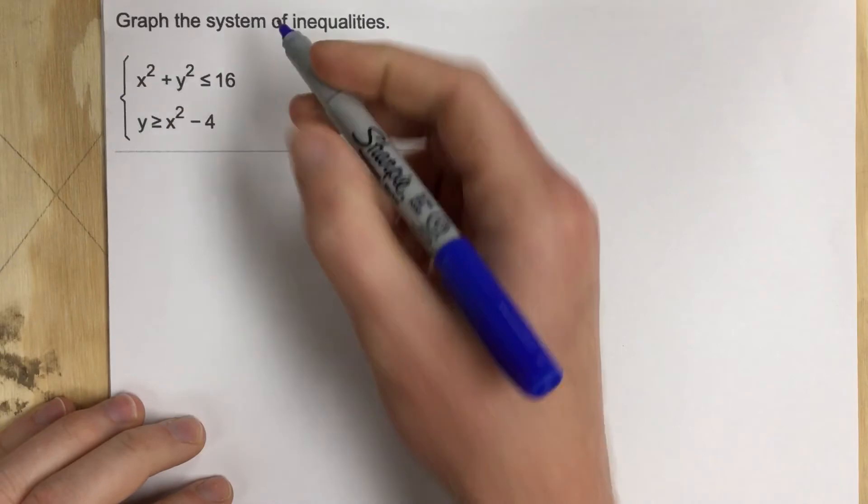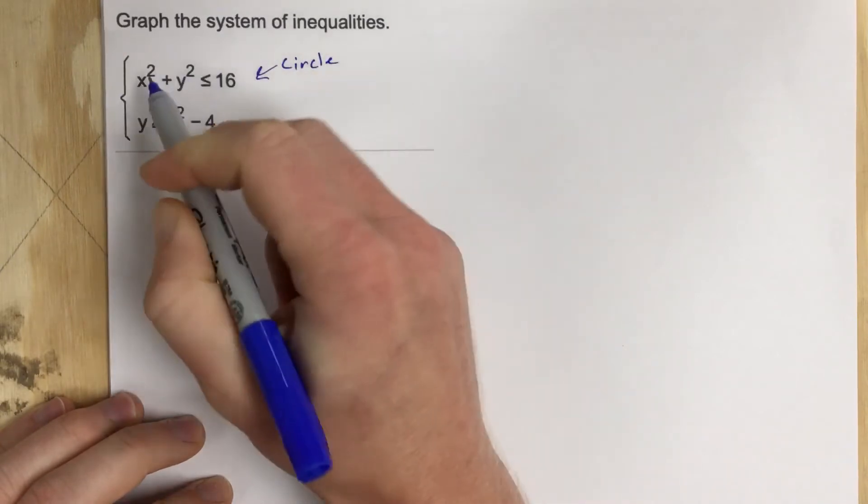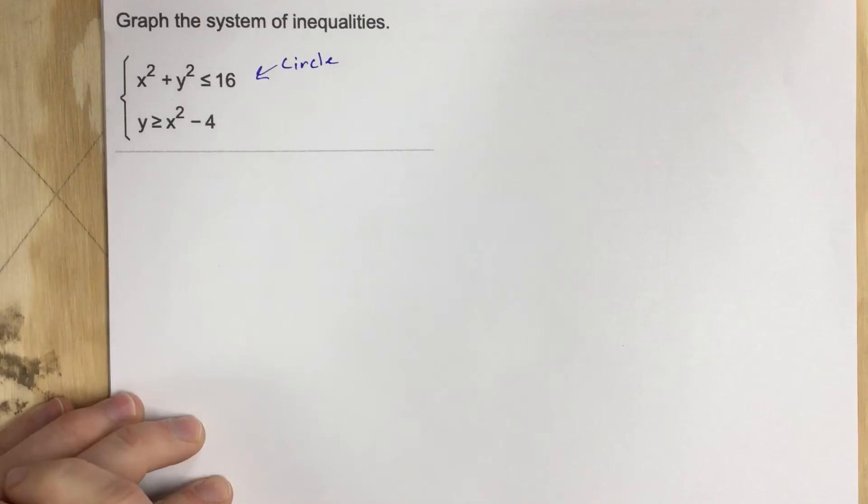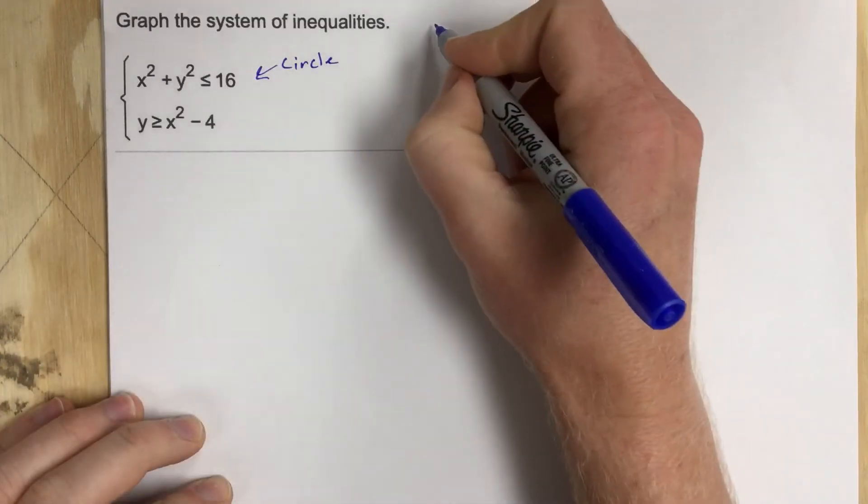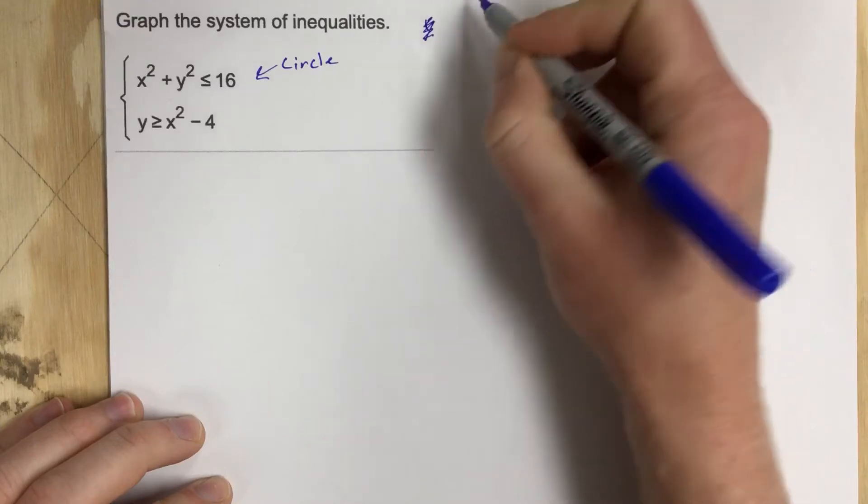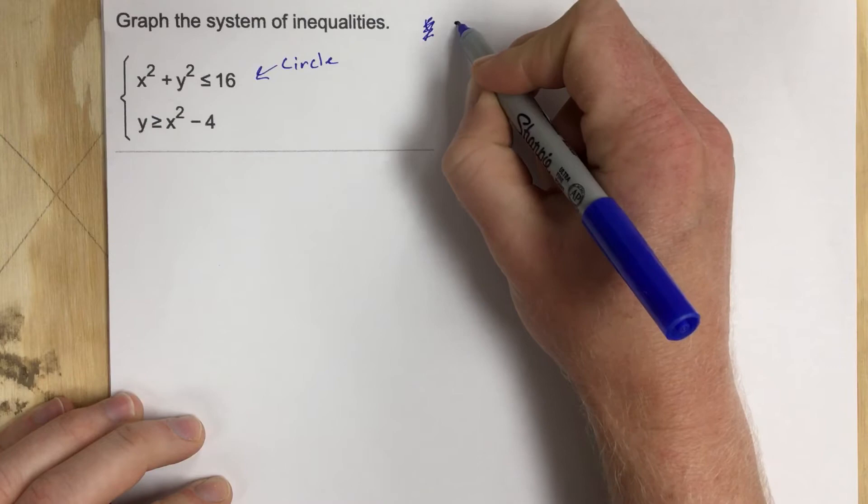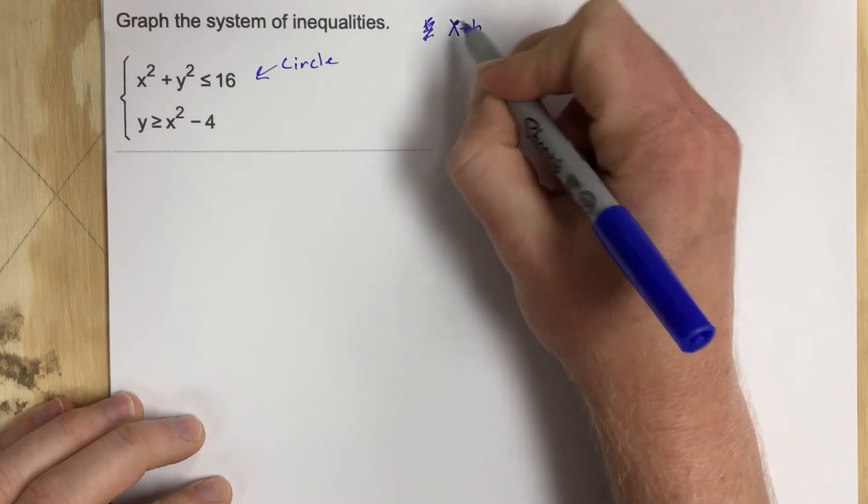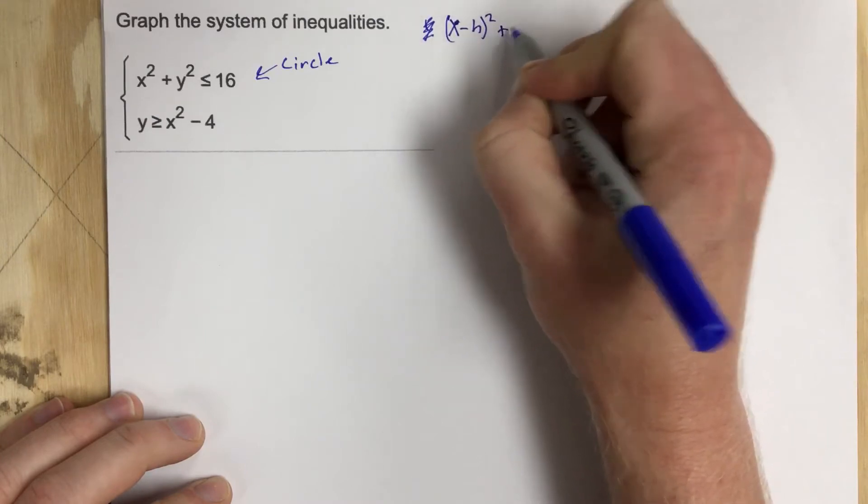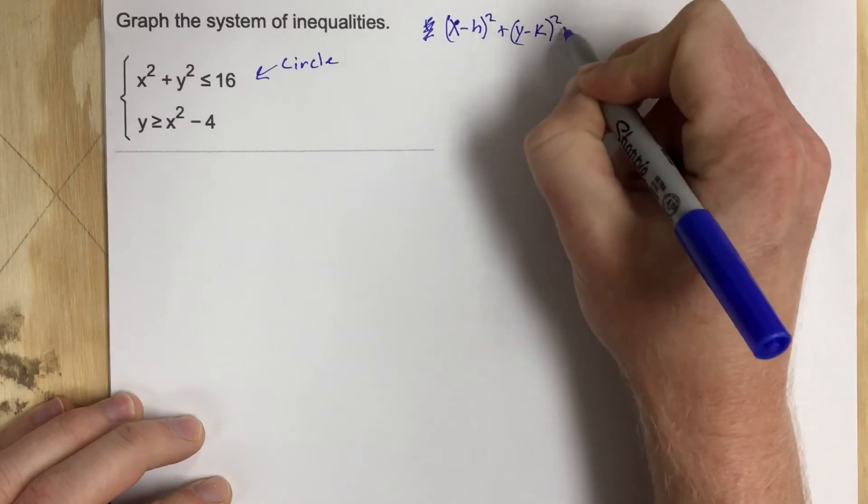They give you a circle, so we need to identify that this is a circle. And you know it's a circle because both x and y are squared. And remember the circle equation is, you'd say x minus h squared plus y minus k squared equals r squared.